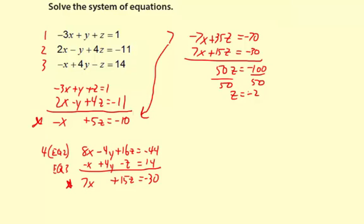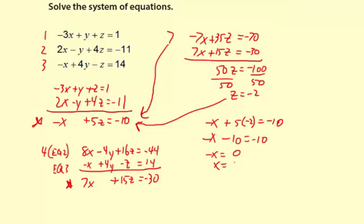Now I'll back substitute into this equation because the numbers are smaller. Negative x plus 5 times negative 2 equals negative 10. So negative x minus 10 equals negative 10. Add 10 to both sides, negative x equals 0, so x equals 0.